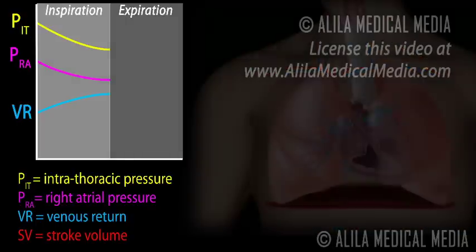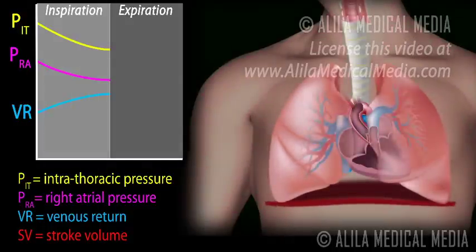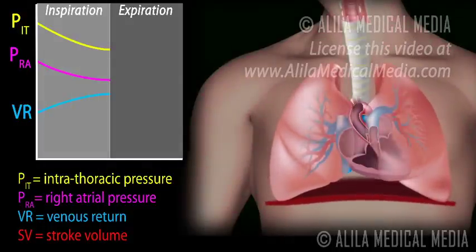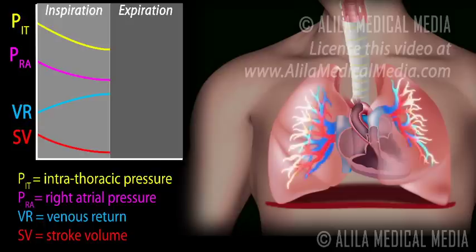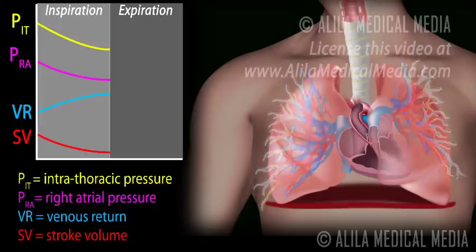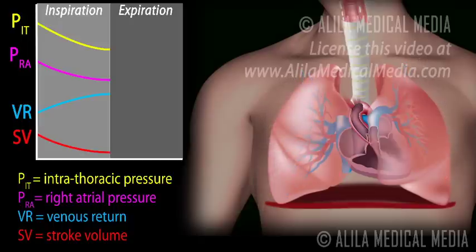On the other hand, left ventricular stroke volume is decreased during inspiration. This is because the expansion of the lungs causes pulmonary blood volume to increase and the blood flow from the lungs to the left atrium to decrease.